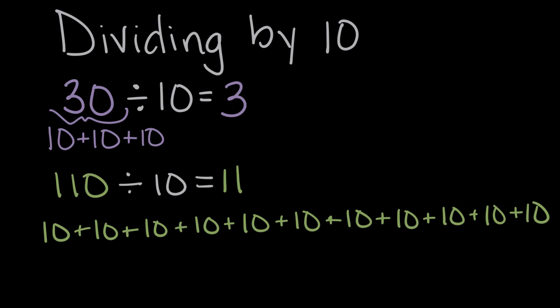Well let's look at these first two. Let's pause here and see if we see a pattern. 30 divided by 10 was 3. 110 divided by 10 was 11. So what happened? What happened to the 30 and the 110 to get these quotients?